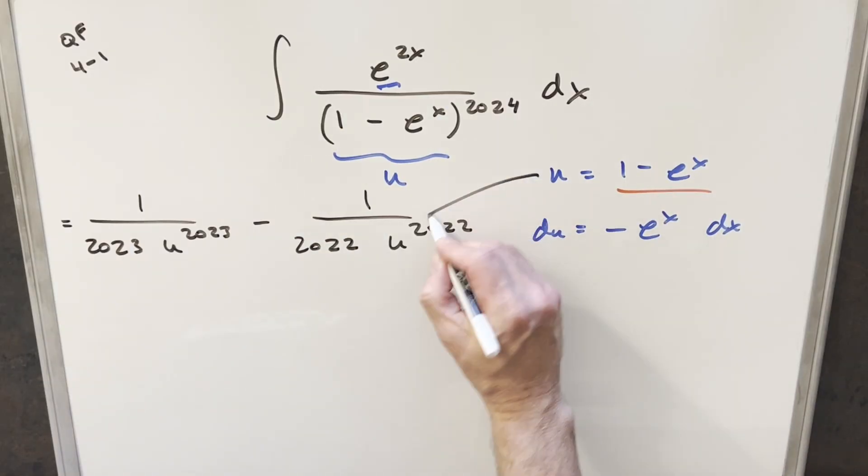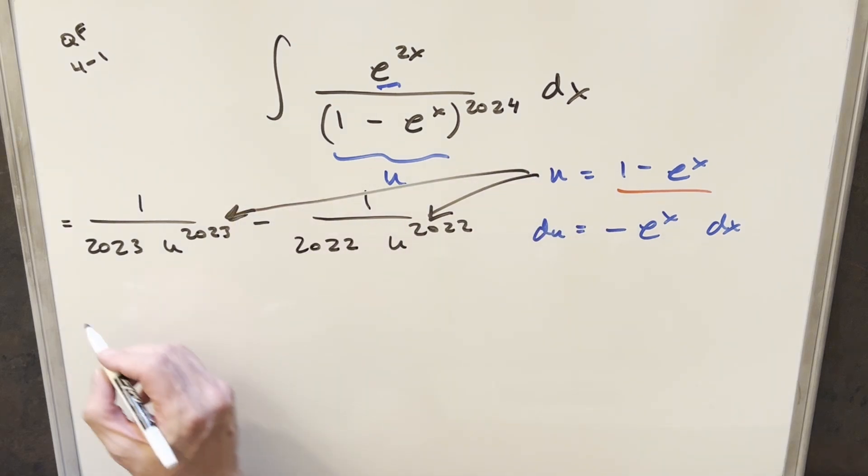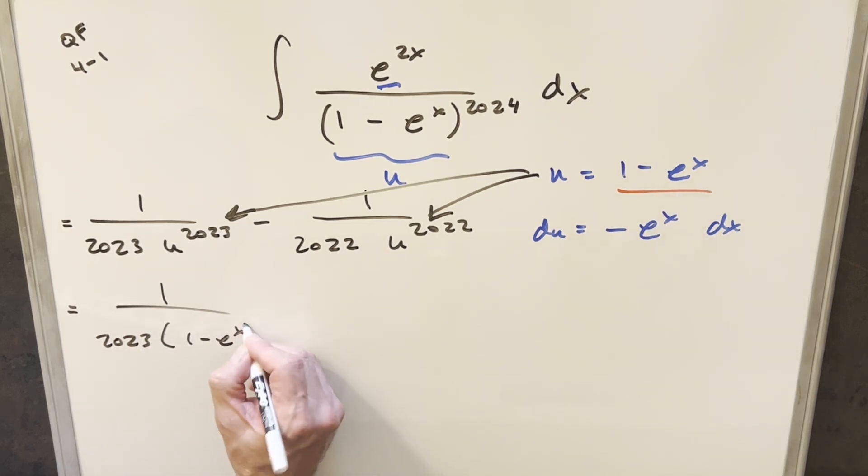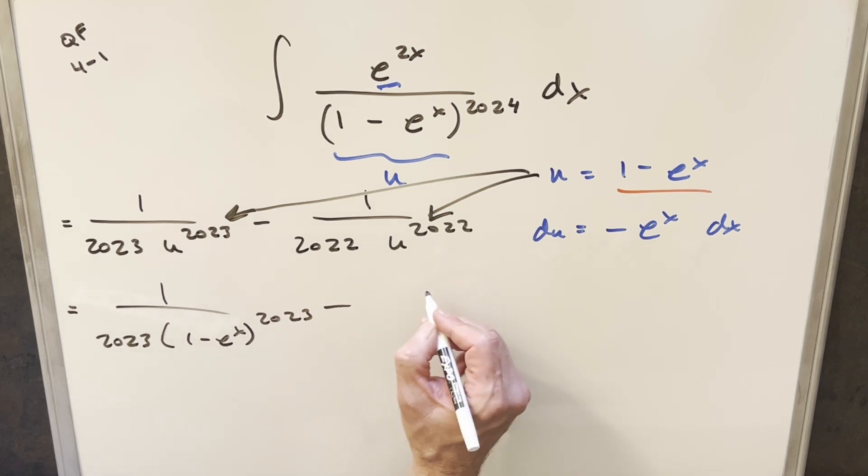But then from here, all I need to do is just back substitute in order to finish it off here and here. So for my final solution to this, we're going to have 1 over 2023. And then this is going to be 1 minus e to the x to the 2023, minus 1 over 2022.